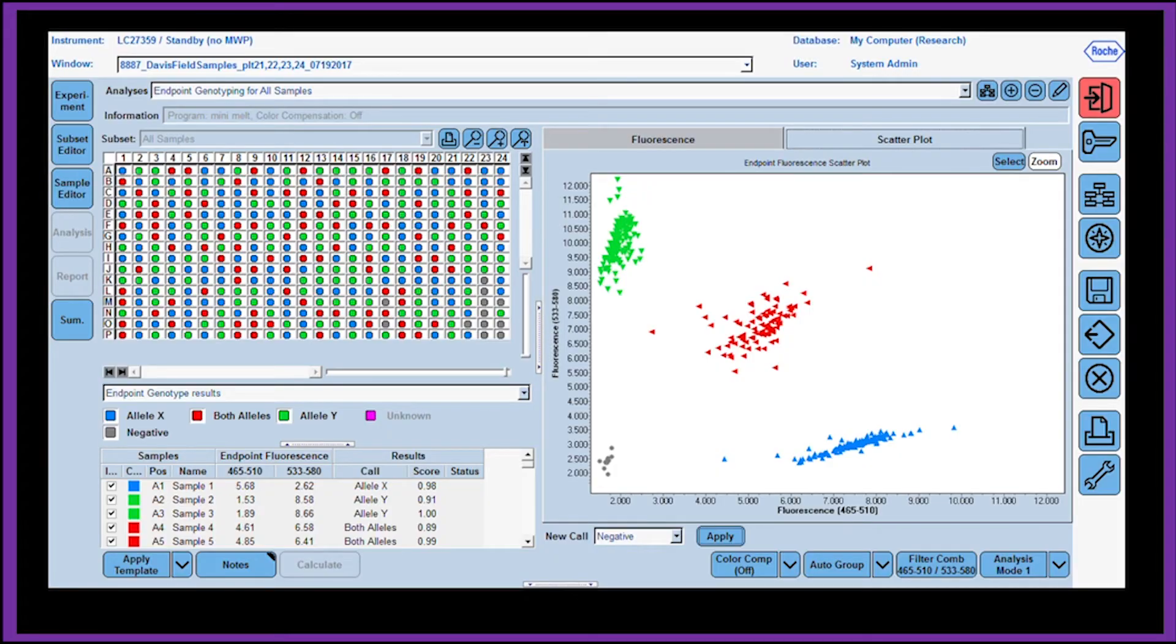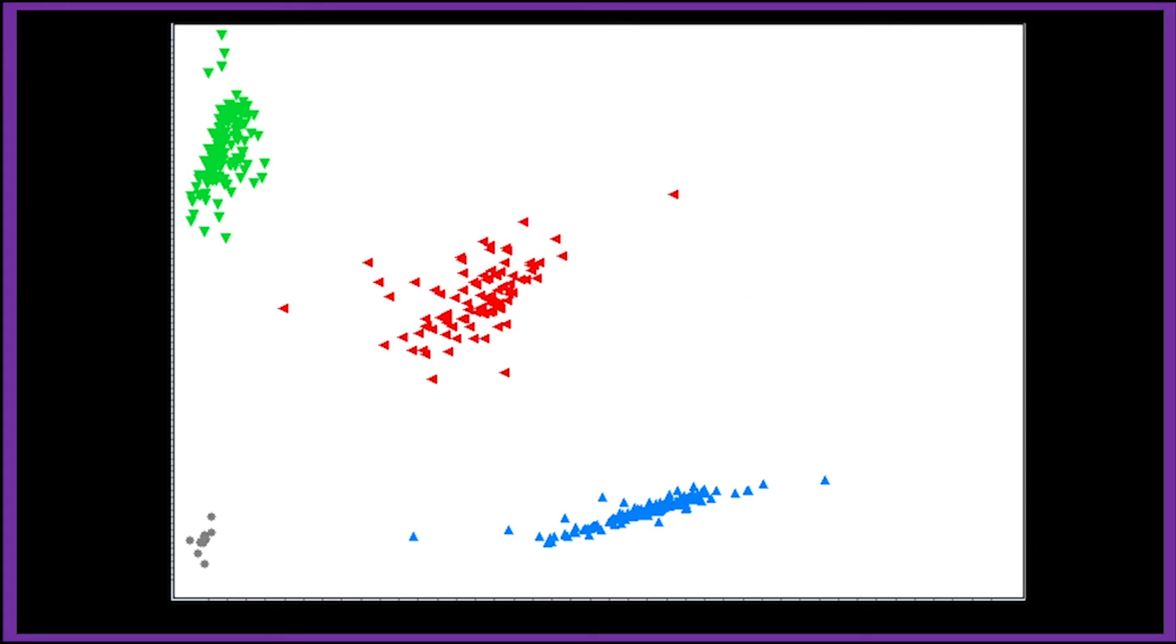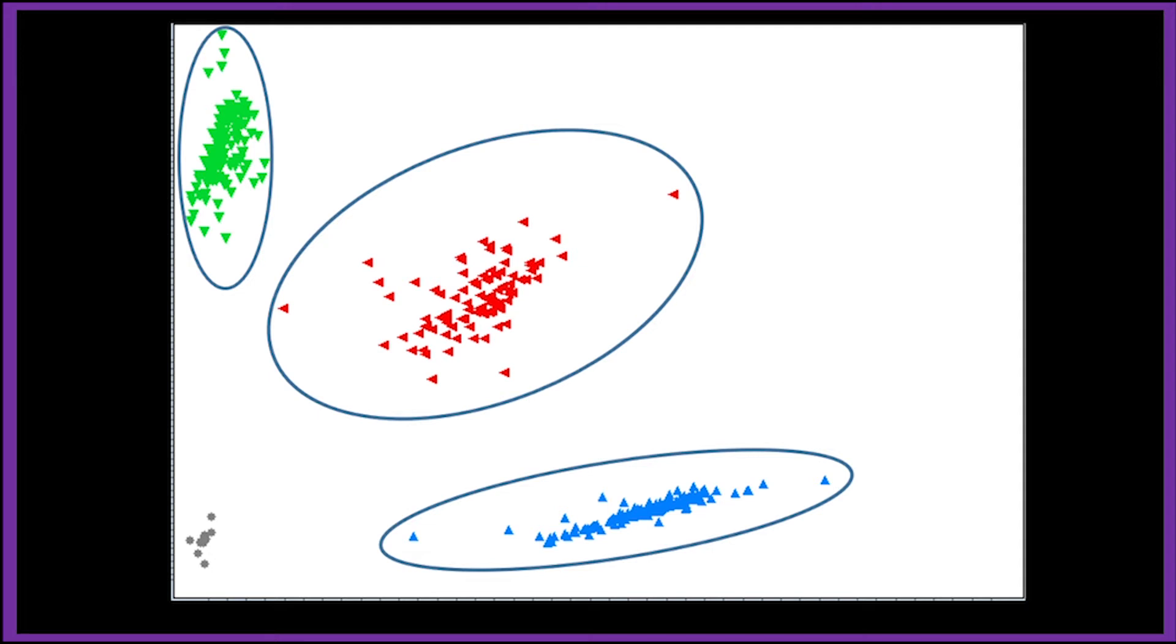This is an example of the output that you get once the experiment is over. The plot generated reveals three major clusters with the triangle representing the plant's genotype. The green cluster is homozygous for A allele which is from the elite parent.